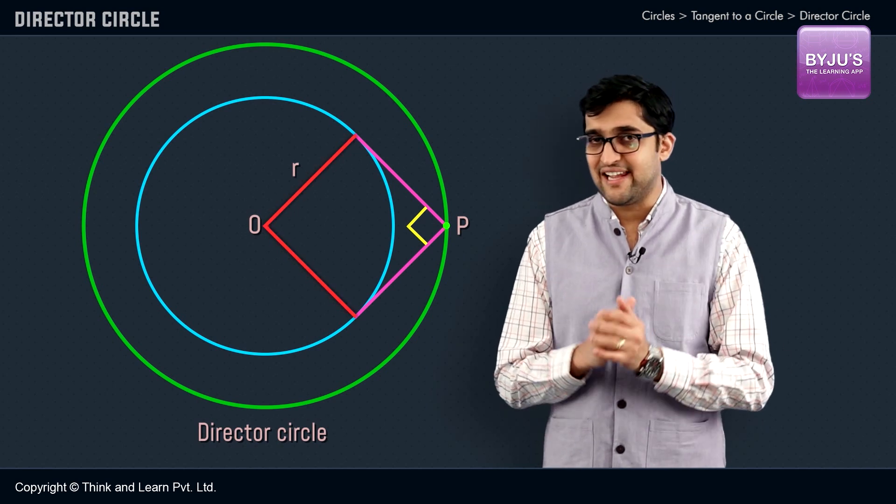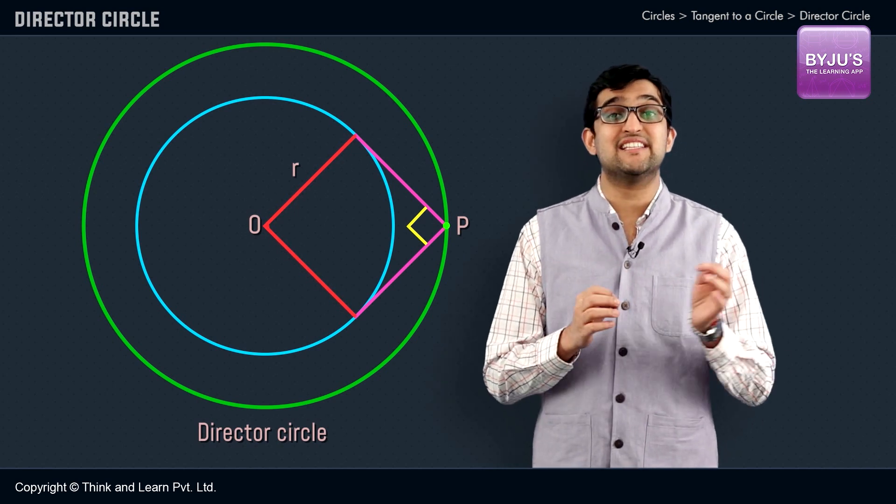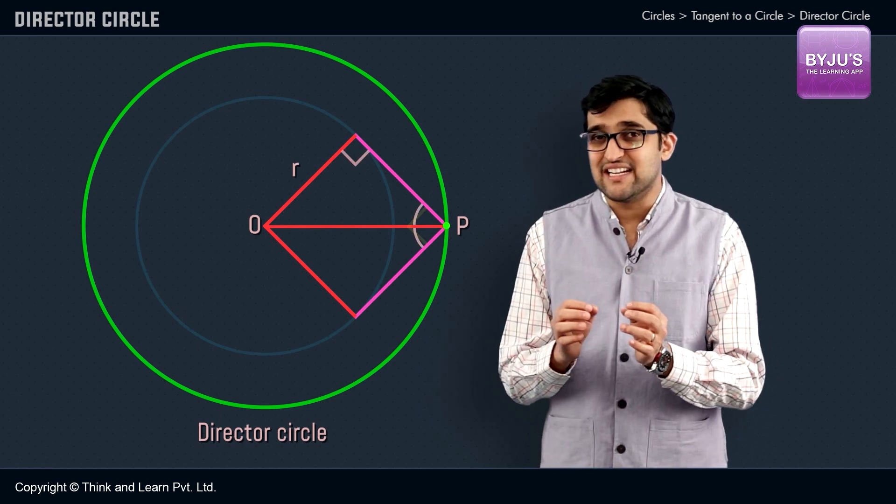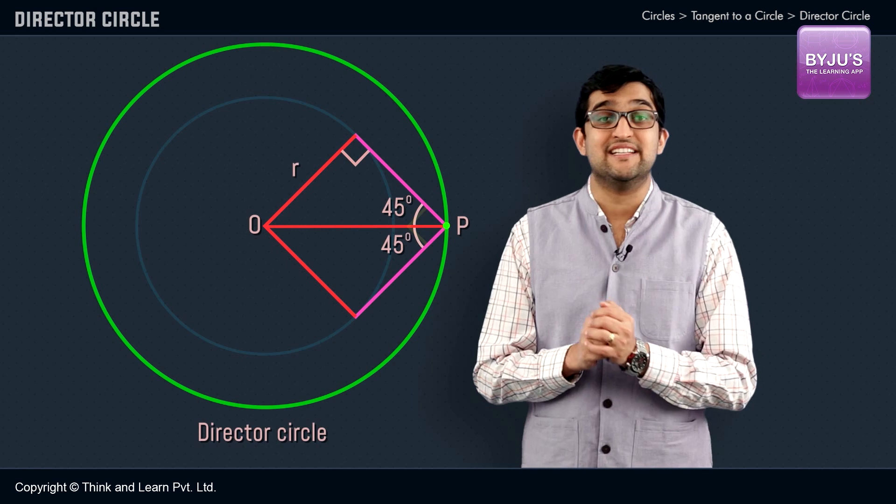if we draw these radii lines and the line connecting the center of the circle with the point of intersection P, we will obtain angles equal to 45 degrees each.